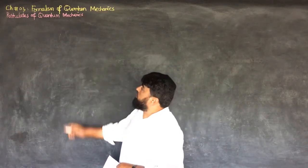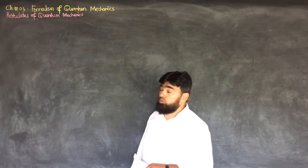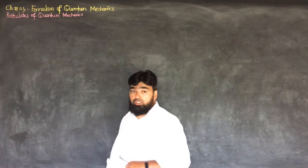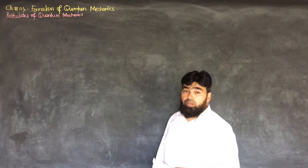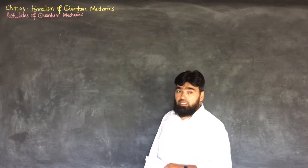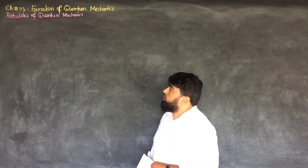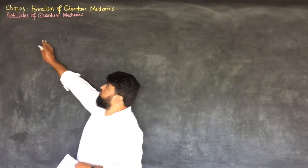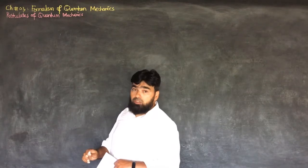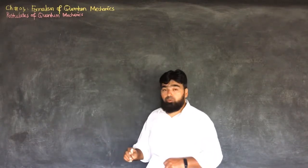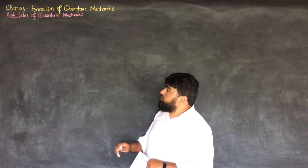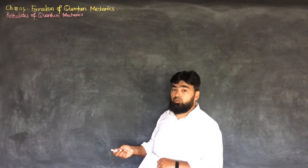We will now start with Chapter 3, which is Formalism of Quantum Mechanics, from Introduction to Quantum Mechanics by D.J. Griffiths. The first thing, which is not very explicitly mentioned in Griffiths but we will discuss, is the Postulates of Quantum Mechanics. We have already encountered these postulates but not explicitly stated them one by one. The postulates are statements which are mutually agreed and correct. To prove a postulate is not possible, but based on the postulates we can prove science and do mathematical derivations.